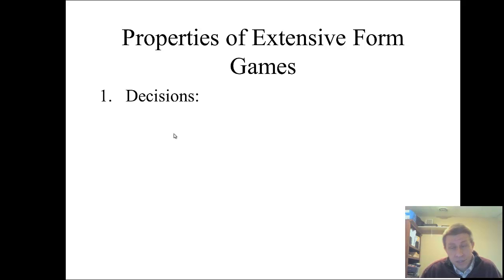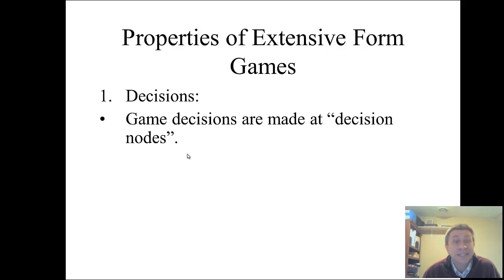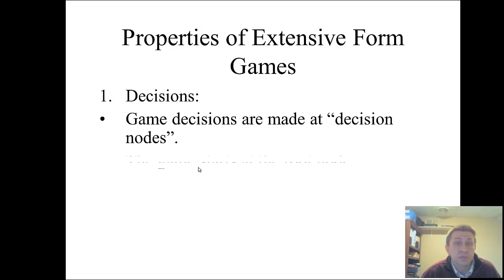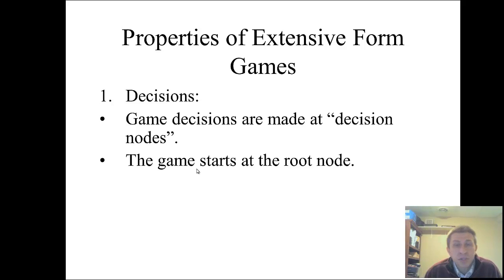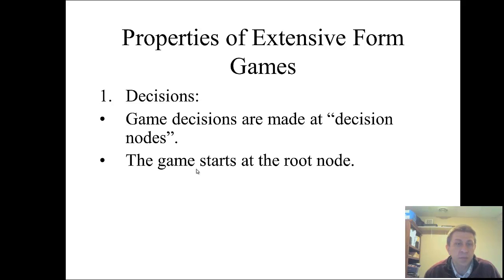So what are the properties? Players make decisions, and game decisions are made at what are called decision nodes. I'll be drawing all of these out on the board. Decision nodes are a little circle. The root node is where the game begins, usually at the top, and it works its way down. The root node is usually an empty circle, while every other decision node is filled in.